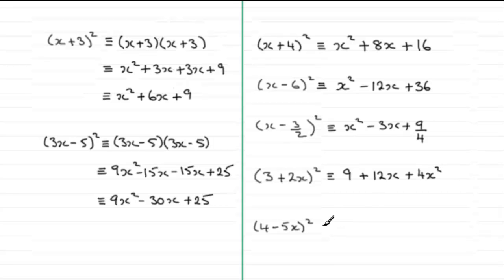And in the last example here, 4 minus 5x all squared, square the 4, that's going to be 16. The product of our two terms is going to be minus 20x, so we double that, so it's going to be minus 40x. And then if we square minus 5x, we're going to get plus 25x squared.